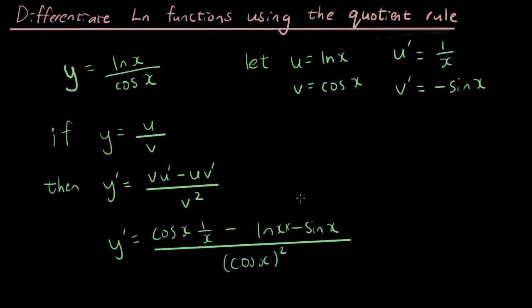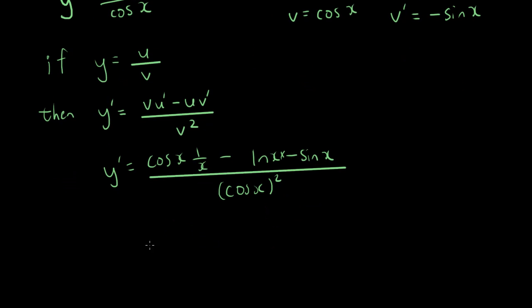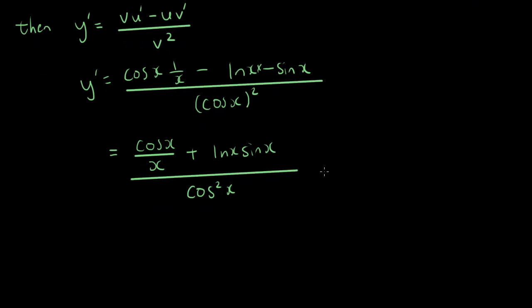Let's simplify this. So now I have cosine x over x. Negative times negative is positive, so ln x sine x divided by cosine x squared, which is the same as cosine squared x. That's what the notation represents - it's easier than drawing brackets around it.